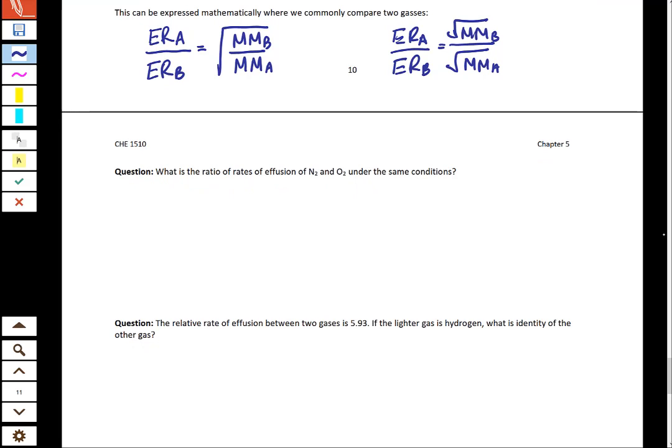For this first one, it says, what is the ratio of effusion rates of N2 and O2 in the same conditions? Same conditions just means they're at the same temperature. If we're looking at the effusion rate of N2 versus O2, you could call either one of these A or B. What most people tend to do is they end up putting the smaller mass as A because it ends up getting them a whole number, and then it's just easier to understand.